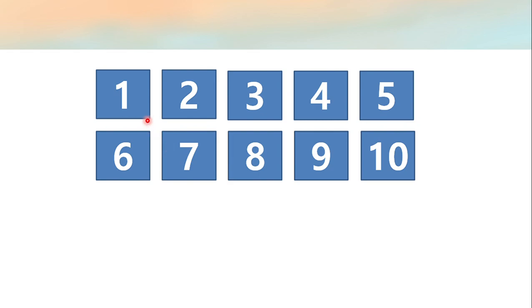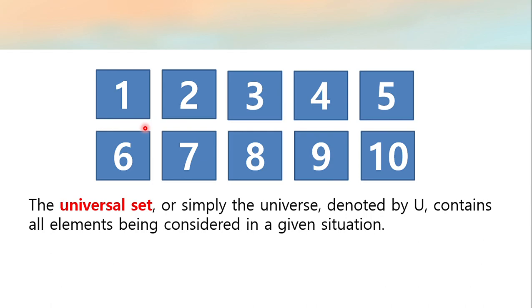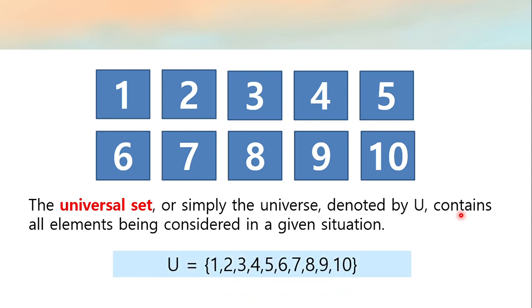Let's now move on to this figure. As you can see, we have numbers 1 to 10. This is what we call the universal set, or simply the universe, denoted by U, that contains all the elements being considered in a given situation. So here, U equals {1, 2, 3, 4, 5, 6, 7, 8, 9, 10}. This is the set that contains all the elements in a given situation.